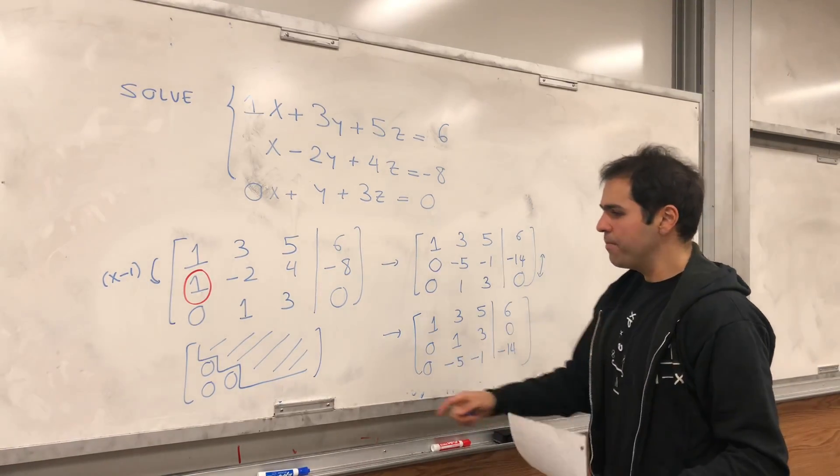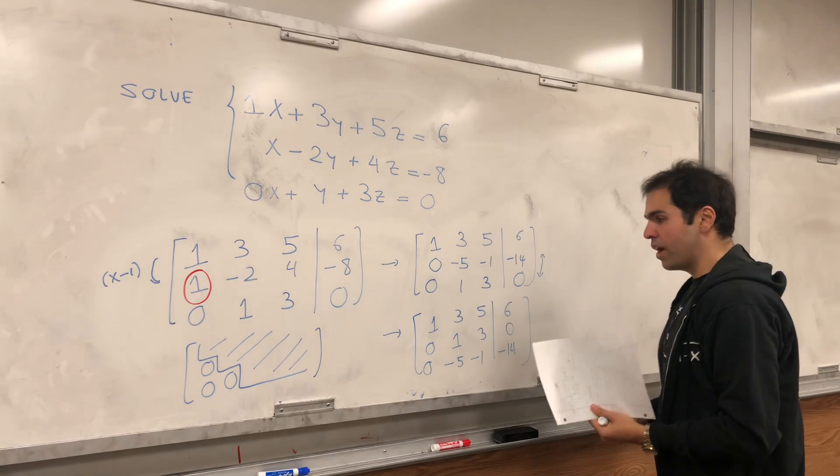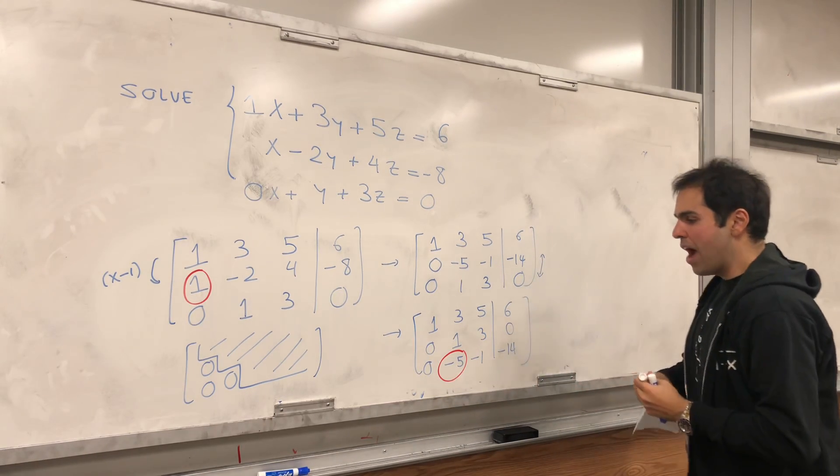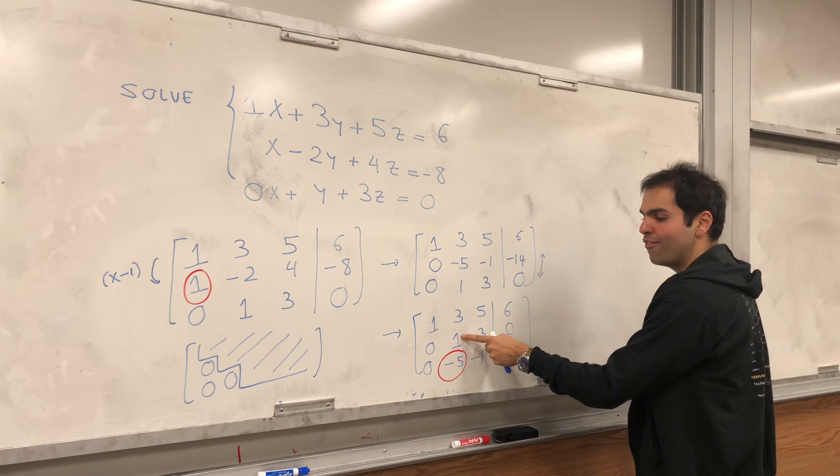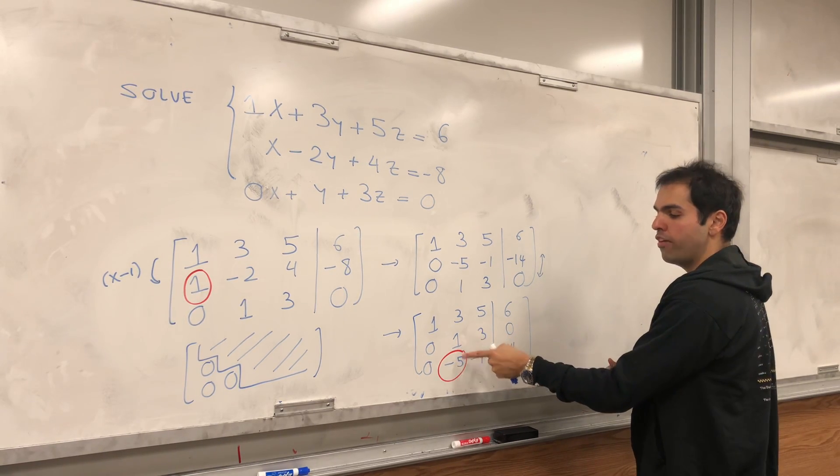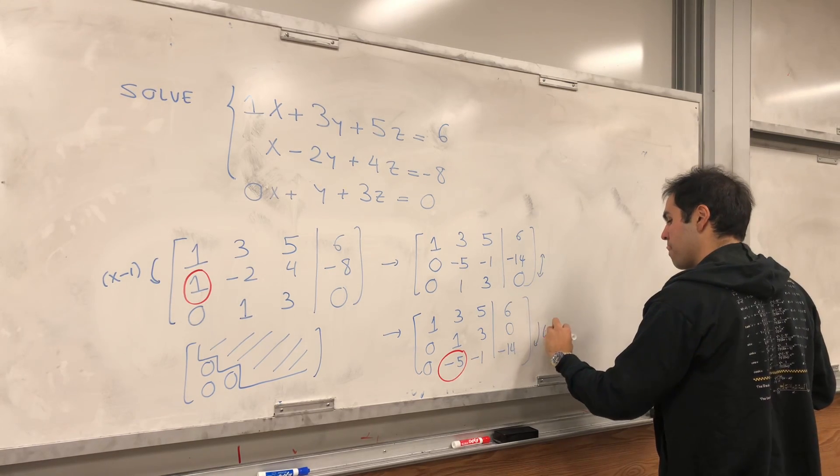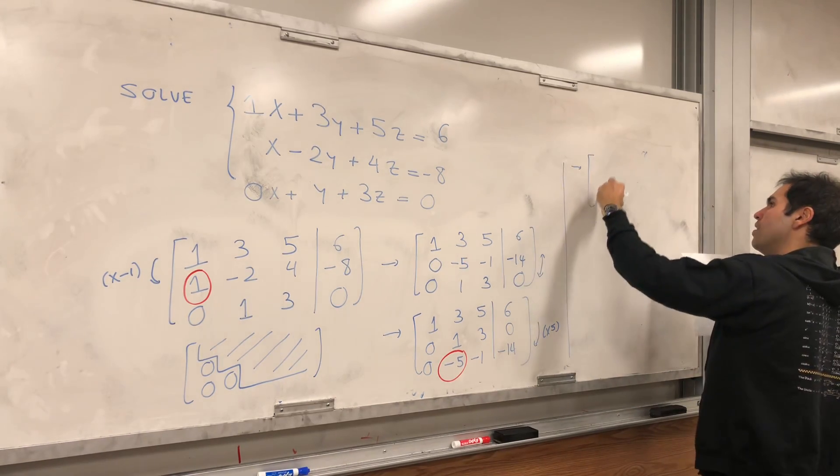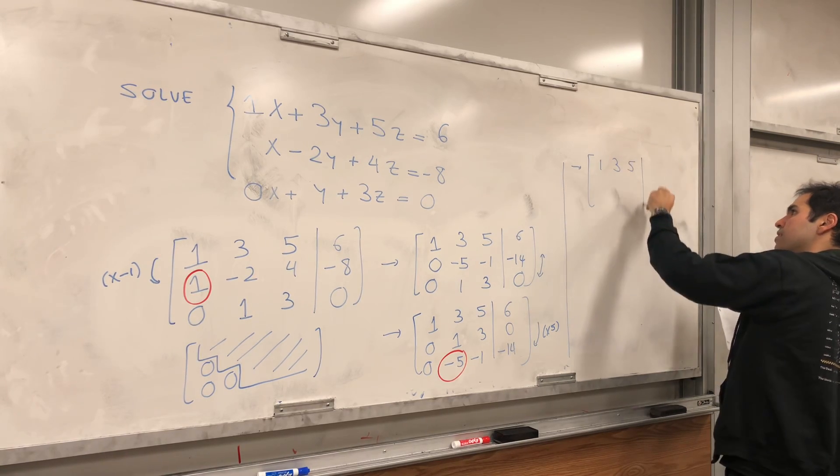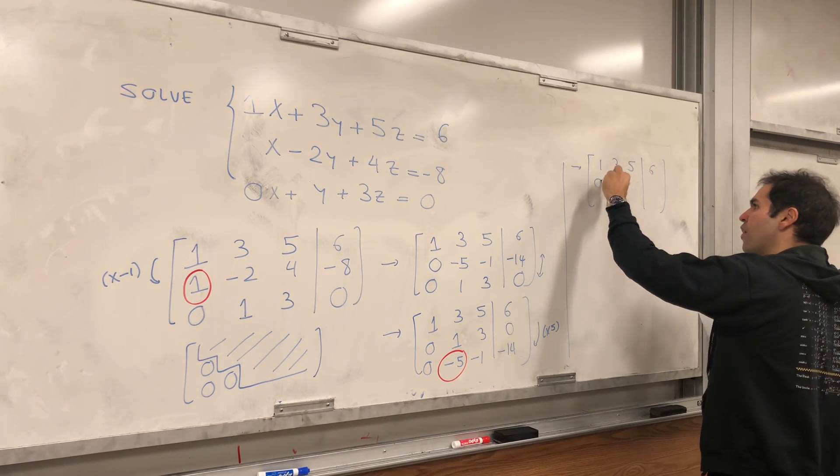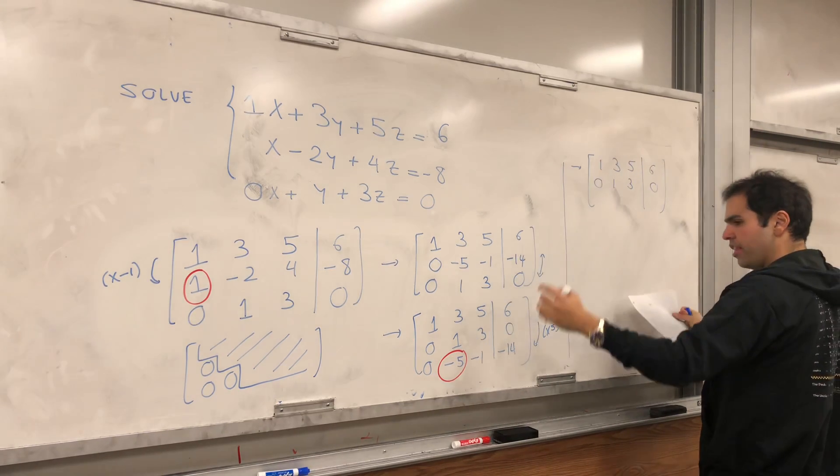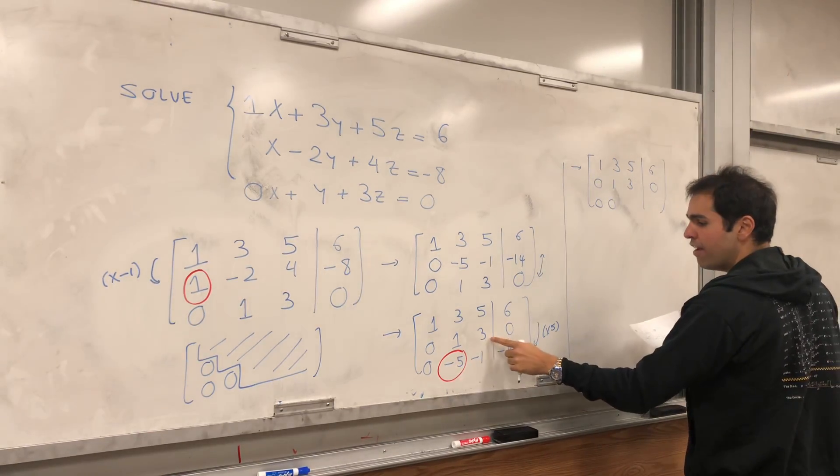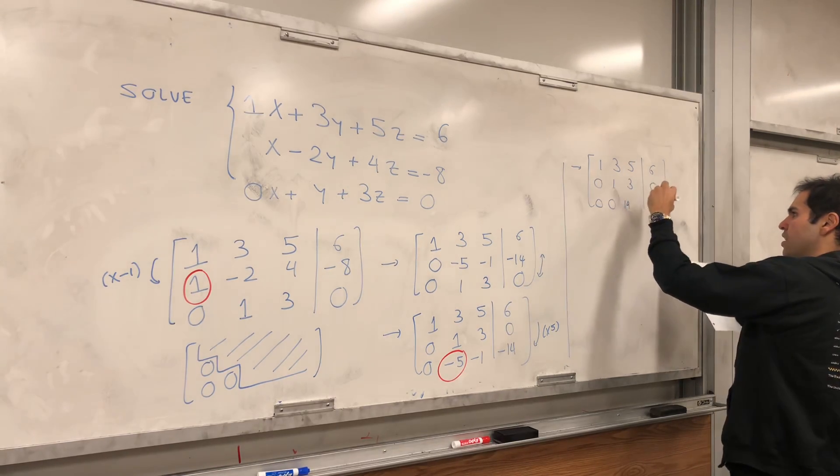And then what's the next step? Well, we want this to be 0. So, let's try to make this minus 5 into a 0. How do you do this? Well, one thing we can do, we can add 5 times this row to this row, because 5 minus 5 is indeed 0. And then what do we get? 1, 3, 5, 6. And then 0, 1, 3, 0. And then 5 times 1 minus 5 is 0, so indeed 0. 5 times 3 minus 1 is 14. And then minus 14.